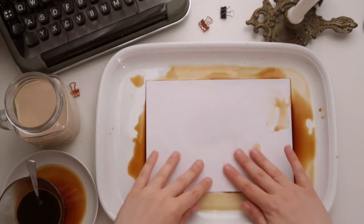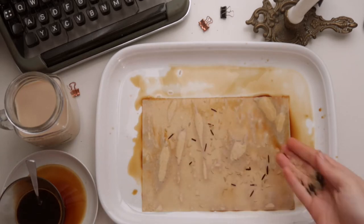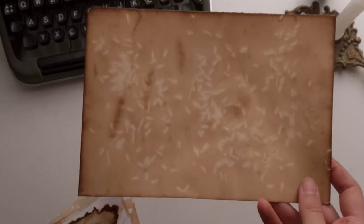Next we sprinkle some rice onto a coffee soaked paper and let it dry for a more soft pattern with some larger speckles.